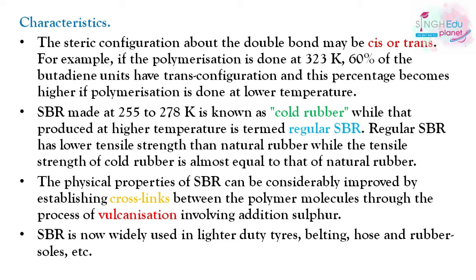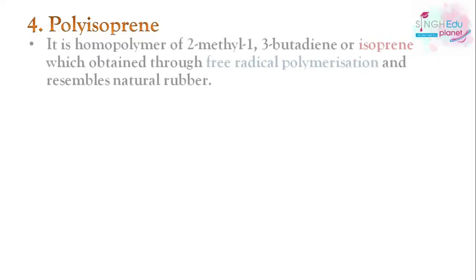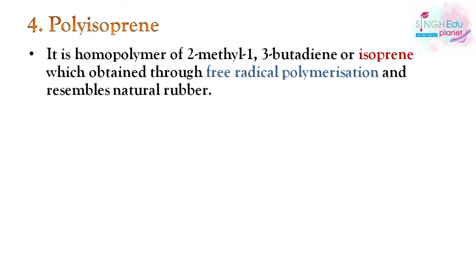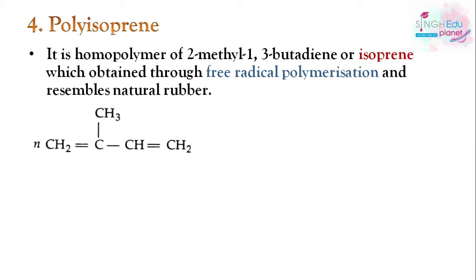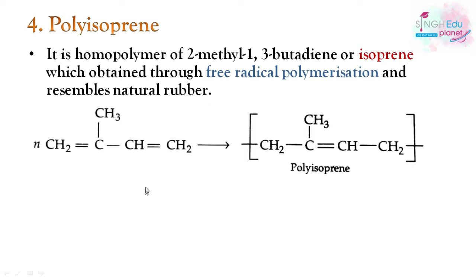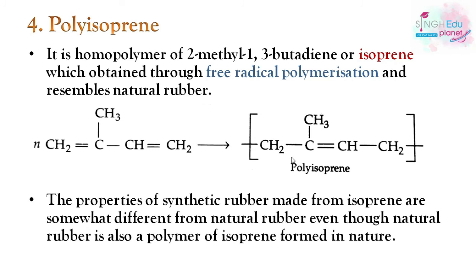Next is polyisoprene, which is a homopolymer of 2-methyl-1,3-butadiene (isoprene), obtained through free-radical polymerization. It resembles natural rubber, but the properties of synthetic rubber made from isoprene are somewhat different from natural rubber, even though natural rubber is also a polymer of isoprene.